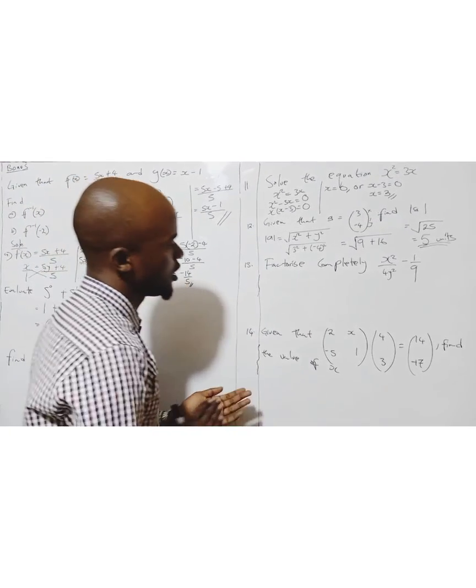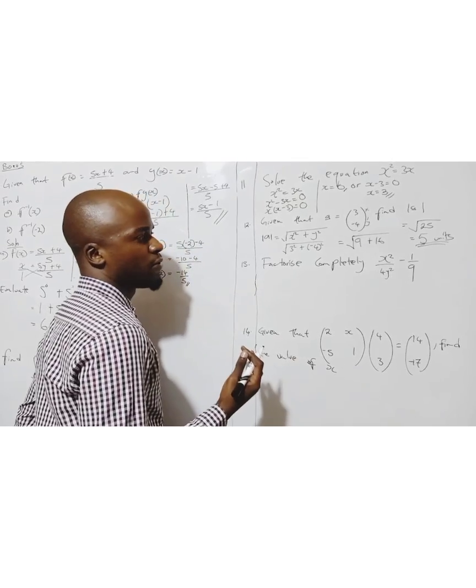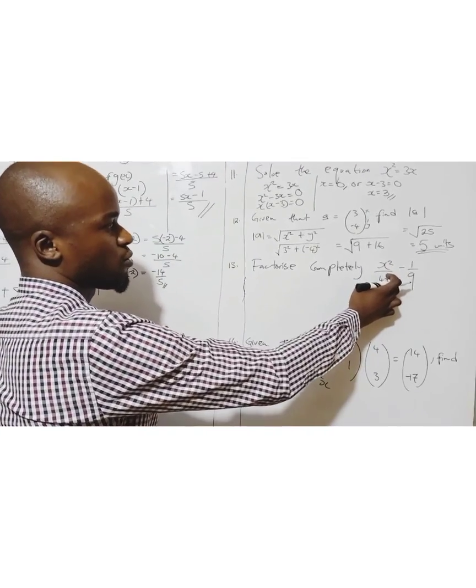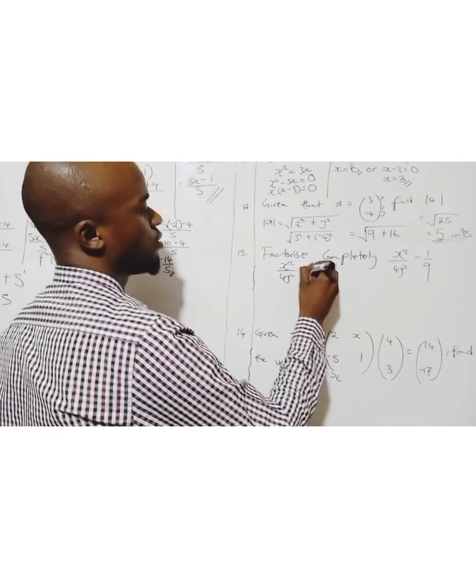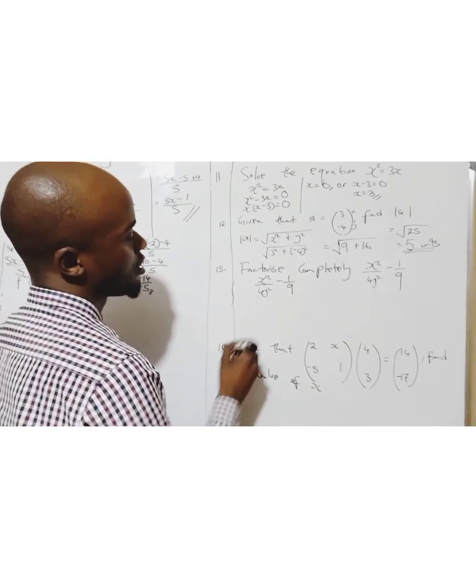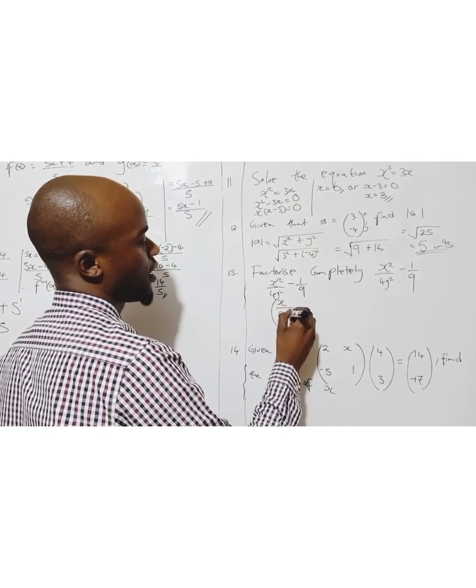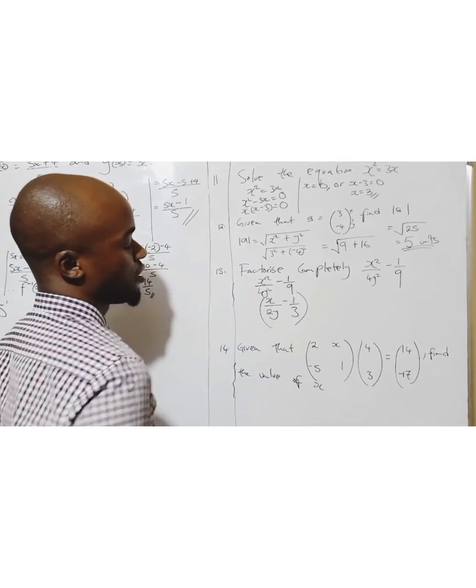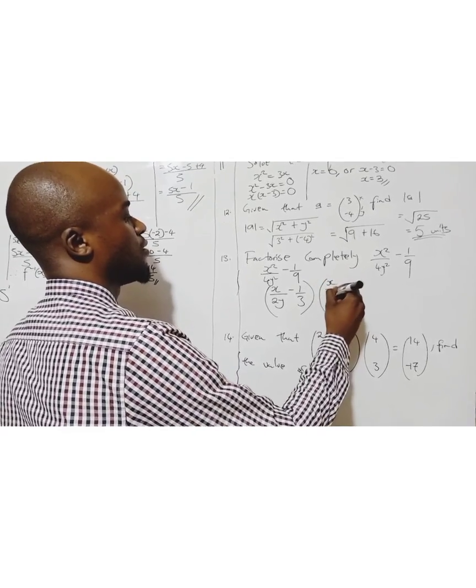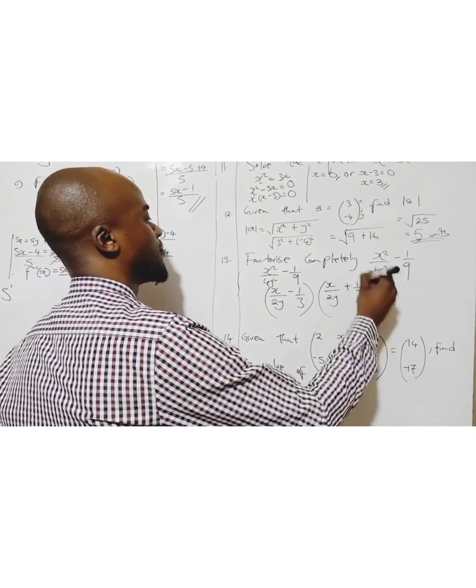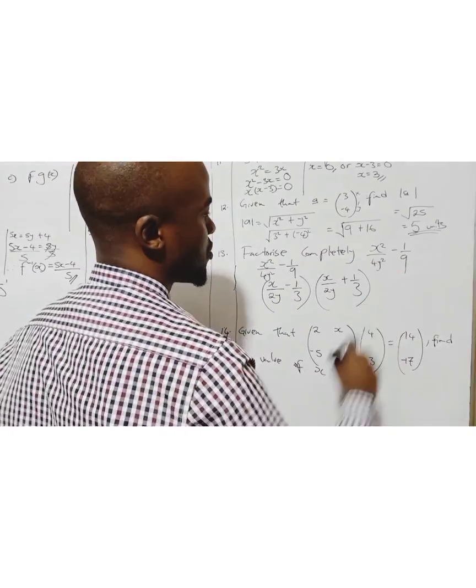Question thirteen: factorize completely x squared over 4y squared minus 1 over 9. By now you know the difference of two squares. This x squared, you open two brackets: x over 2y minus 1 over 3. I found the root of this, found the root of that. Same thing here: x over 2y plus 1 over 3. There's nothing that is common, but they all have roots.